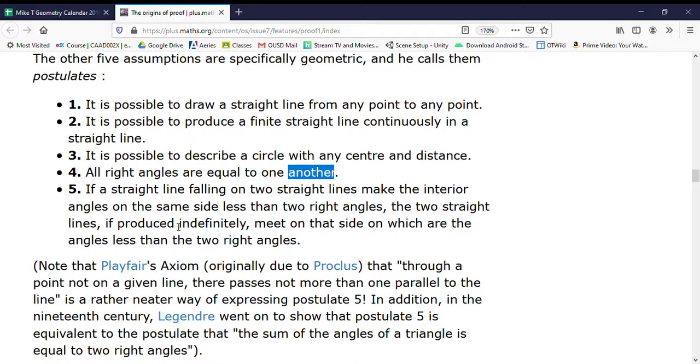And then this last one: If a straight line falling on two straight lines makes the interior angles on the same side less than two right angles, the two straight lines, if produced indefinitely, meet on that side on which the angles are less than two right angles. So the idea here is if I have two lines and there's a right angle between them—if I have a transversal and I have a right angle between them—those are actually parallel. So the point is if I have a transversal and one of them is a right angle but the other one is less than a right angle, those lines are going to run into each other at some point if you continue to produce them forever.